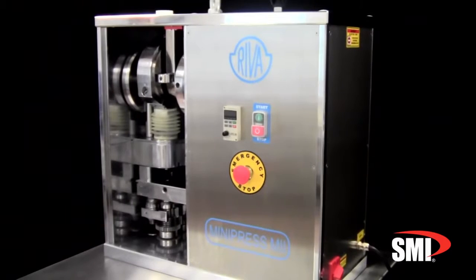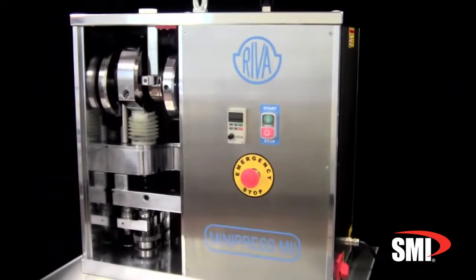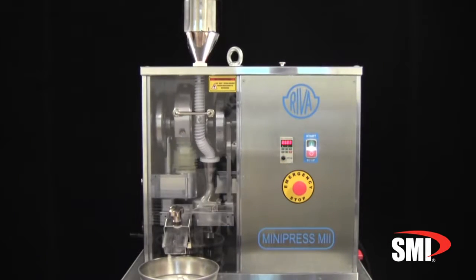The SMI REVA MiniPress is a powerful 6-ton single station eccentric tablet press capable of producing tablets manually or automatically up to 6,000 tablets per hour.